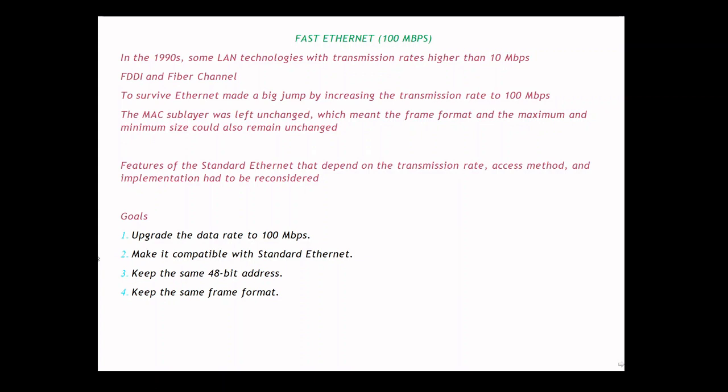Standard Ethernet's data transmission rate is 10 Mbps. In the 1990s, there were some LAN technologies that were providing transmission rates higher than 10 Mbps. Ethernet technology had to survive, so it made a big jump by increasing its transmission rate to 100 Mbps. That 100 Mbps Ethernet is called Fast Ethernet.